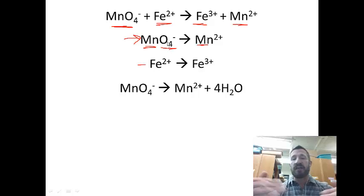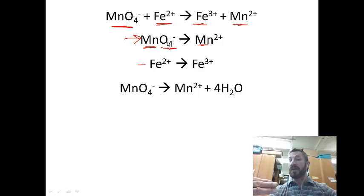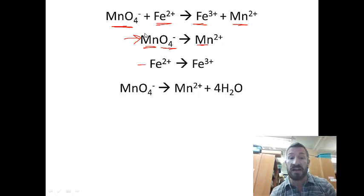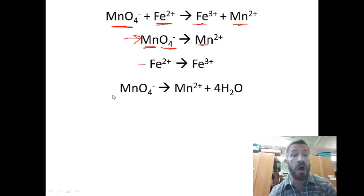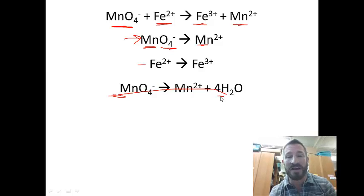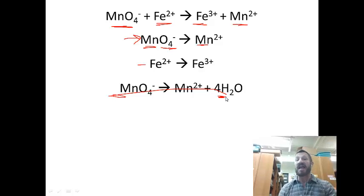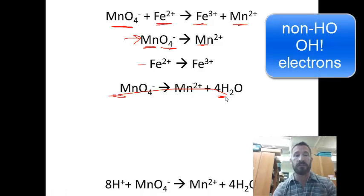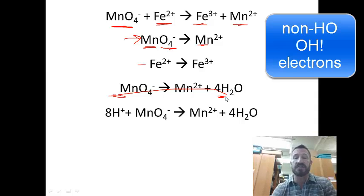Now we balance hydrogen. There are no hydrogens on the reactant side, but the product side now has eight hydrogens from the four water molecules. So we add eight protons (H⁺) to the reactant side: 8H⁺ + MnO₄⁻ → Mn²⁺ + 4H₂O. We now have four oxygens on each side and eight hydrogens on each side.